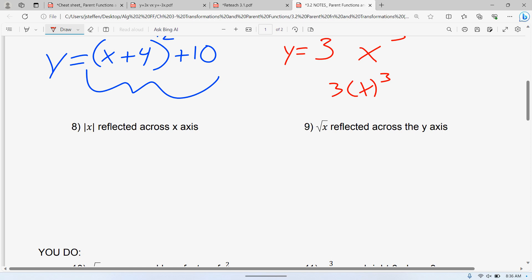The next one, the absolute value of x reflected across the x-axis. So it's the absolute value of x. No left and right at all, so there's nothing inside that absolute value. We're reflecting across the x-axis.